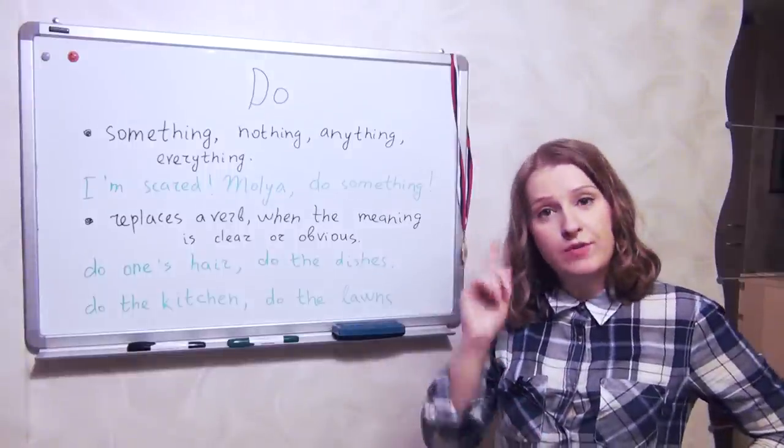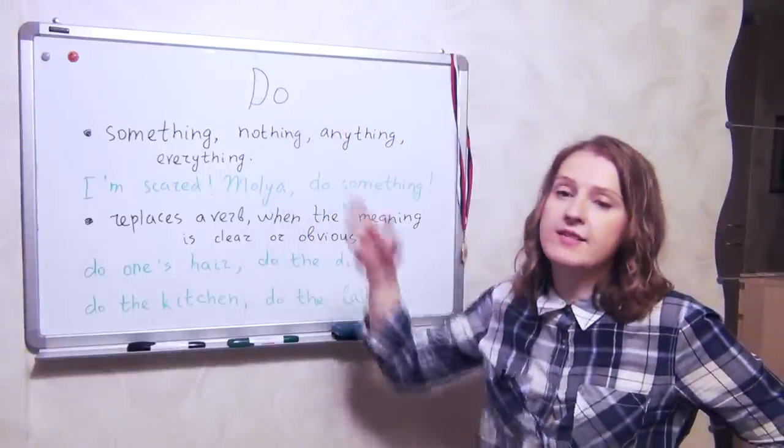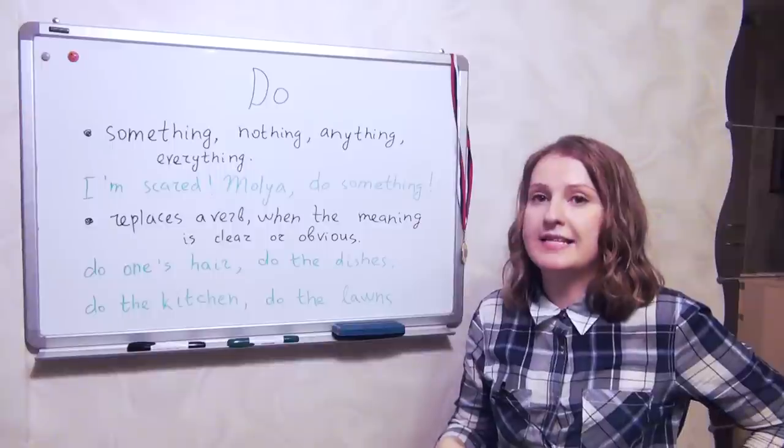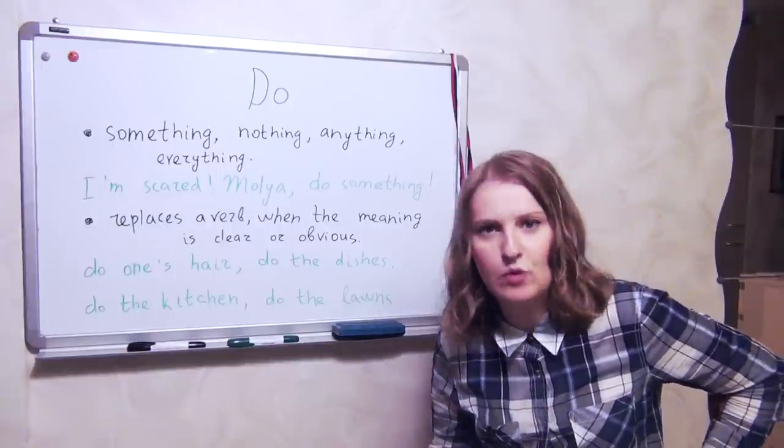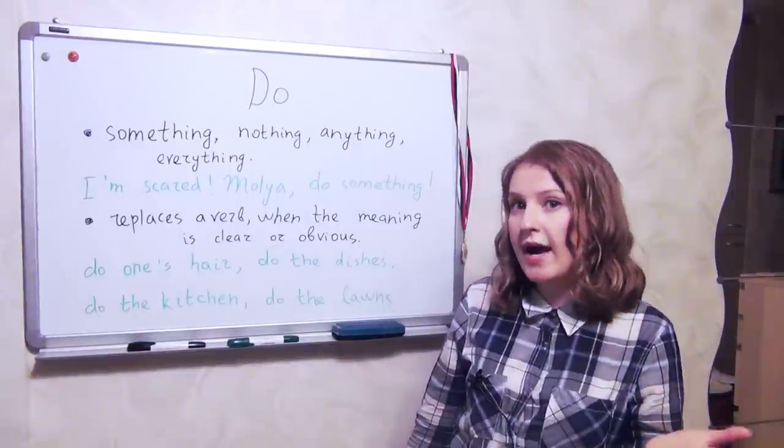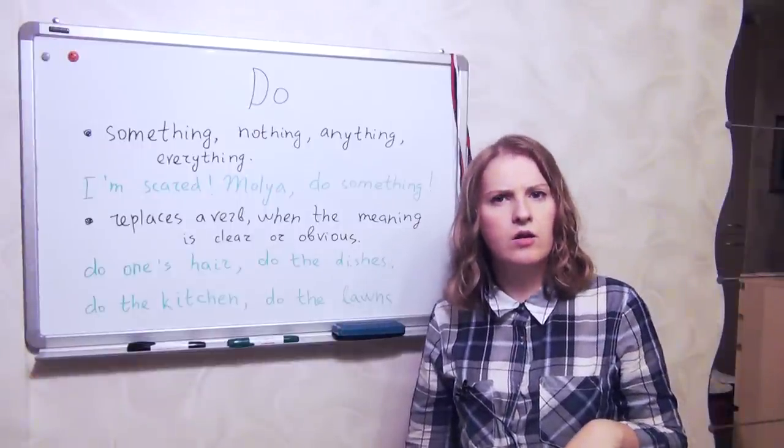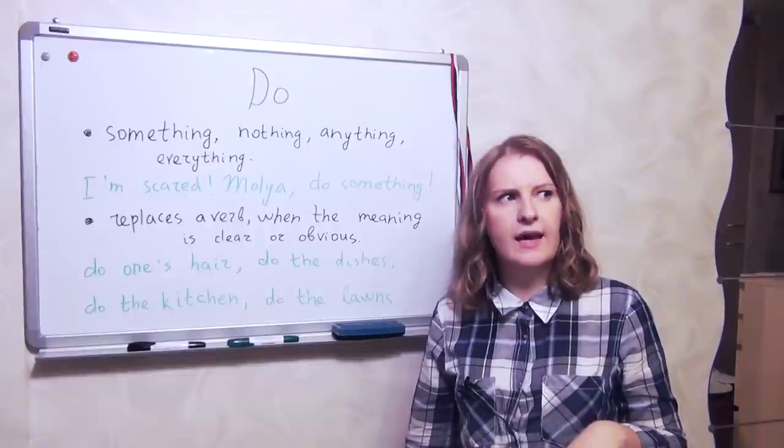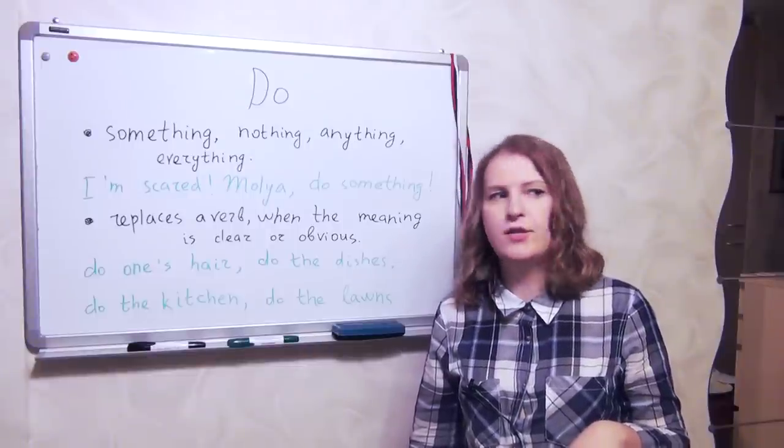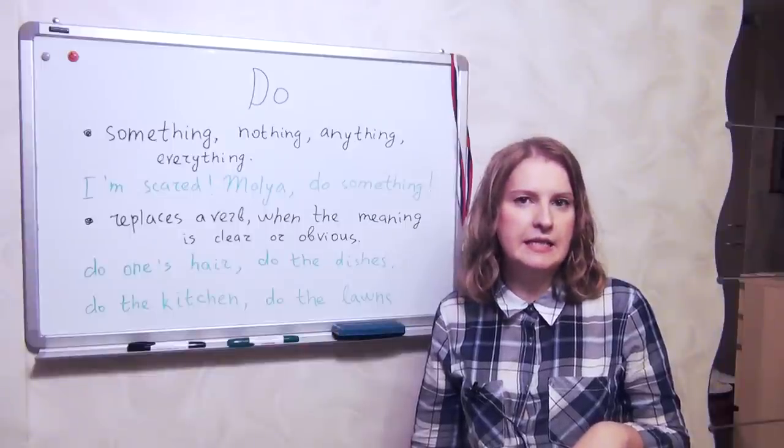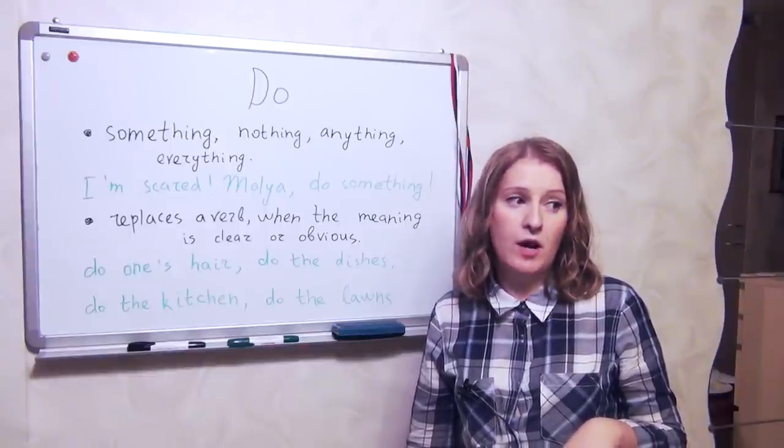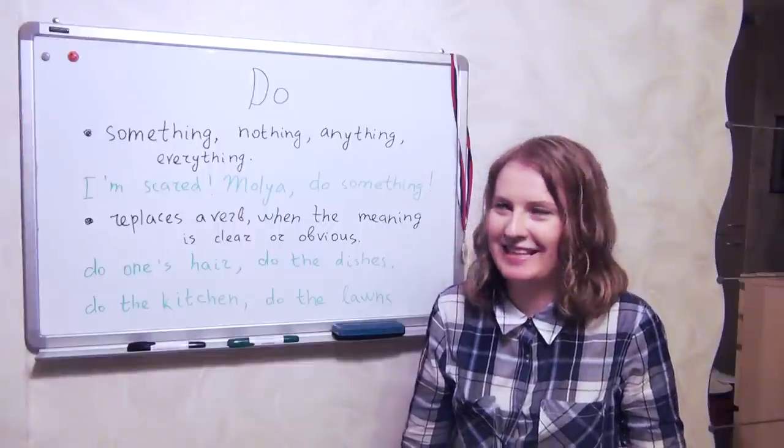Moreover, we should remember that do is used as an auxiliary verb in different tenses. Present simple, mostly. Do you have a cat? Do you have a car? Or I don't have a dog. I don't have a weasel. But I want to. I'm joking.